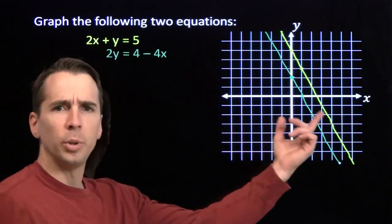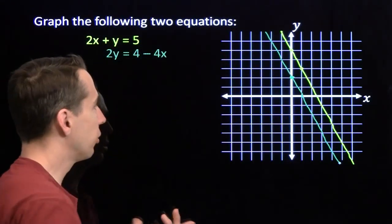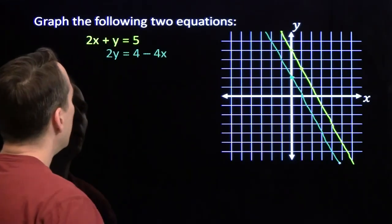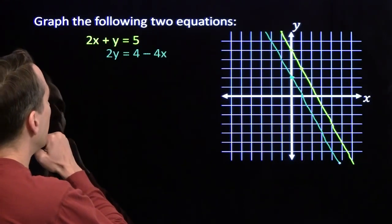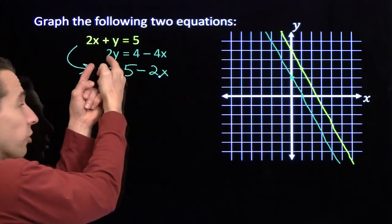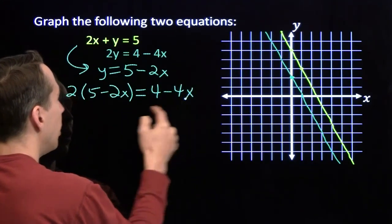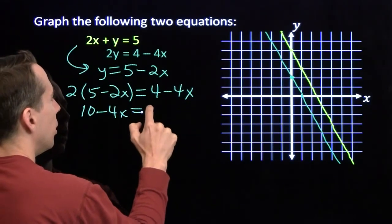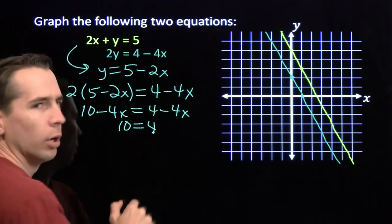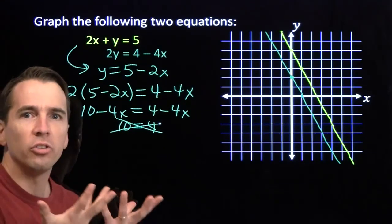Uh-oh — they don't appear to intersect. Well, maybe they intersect way down there or way up there somewhere. If I really wanted to find where they intersect, I'm going to have to solve this system of equations because my board is not big enough. So let's solve it. I'll solve for y: y equals 5 minus 2x, and substitute into the second equation: 2 times (5 minus 2x) equals 4 minus 4x. Expanding: 10 minus 4x equals 4 minus 4x. If I add 4x to both sides, I get 10 equals 4.